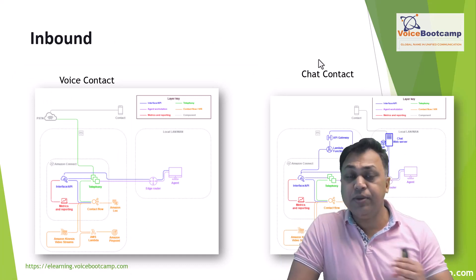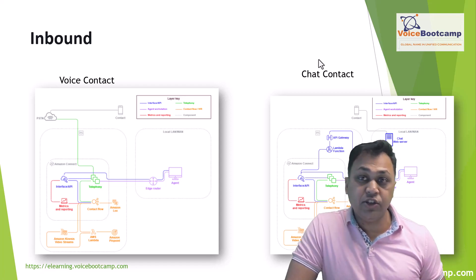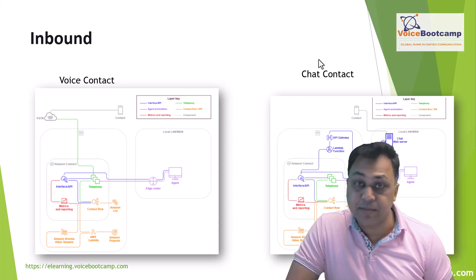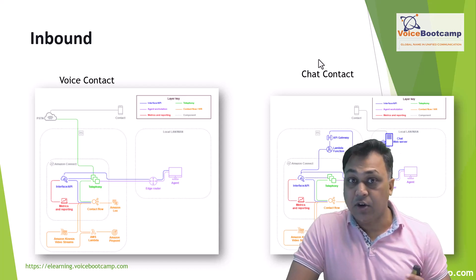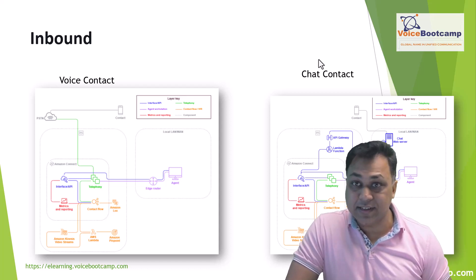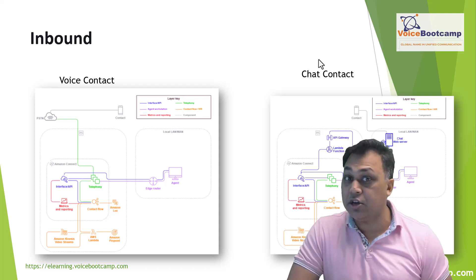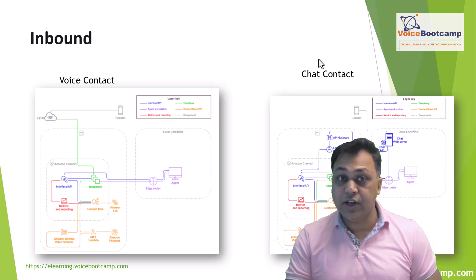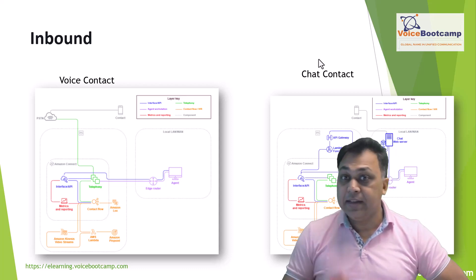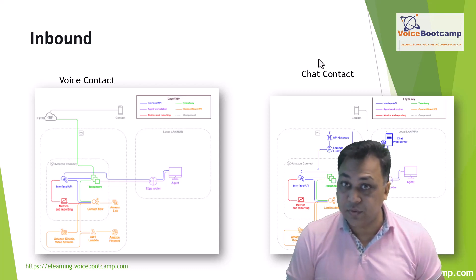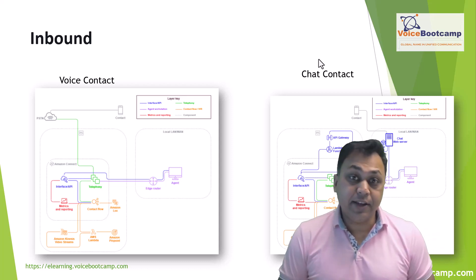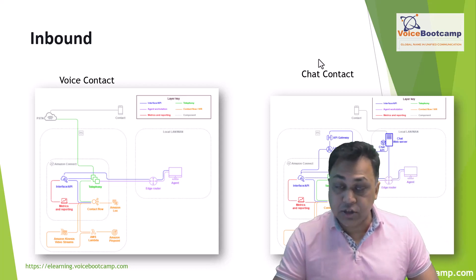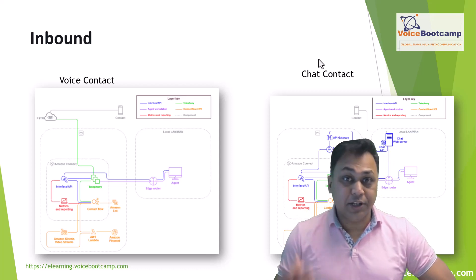The inbound contact center is used to describe communication that is requested by the end user or customer. When they dial your toll-free numbers or local DID, a contact or call can reach your Amazon Connect contact center for inbound self-service or to talk to a live agent. They can communicate via telephone line, cell phone, VoIP line, PSTN phone, or even chat with a live agent via web chat functionality.